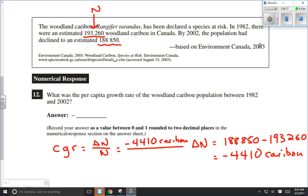Divided by our original N, 193,260 caribou. Let's not get the wrong number here. We want to make sure that right here we get the original N population, not what it is in the future or what it is at the end of the timeframe here. We don't want 188,850. We want what it was before.